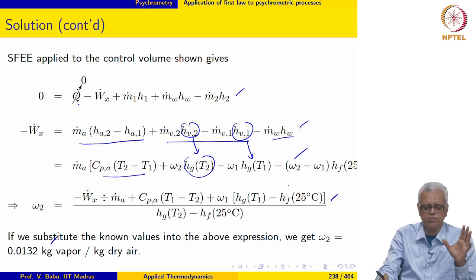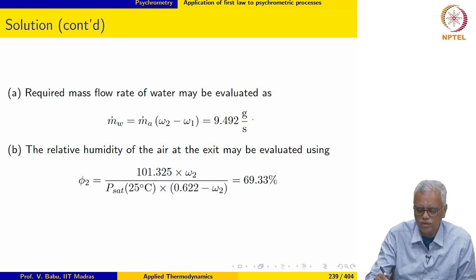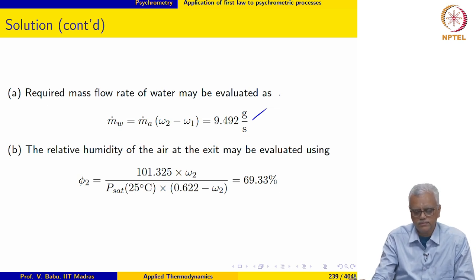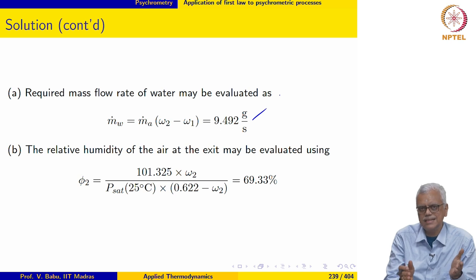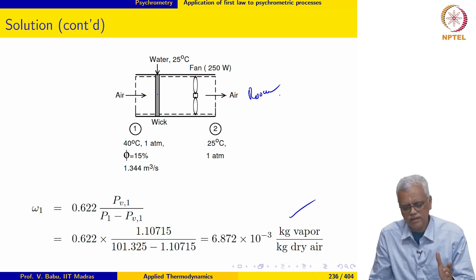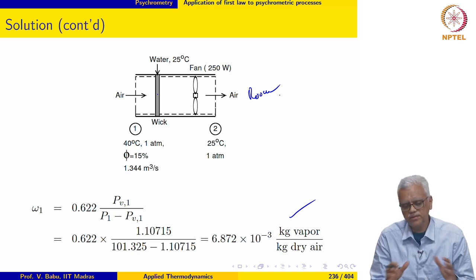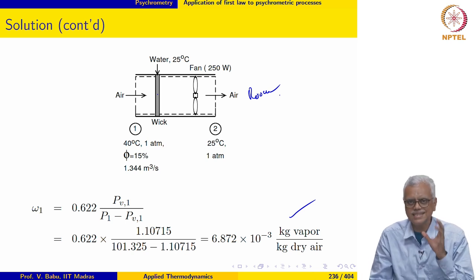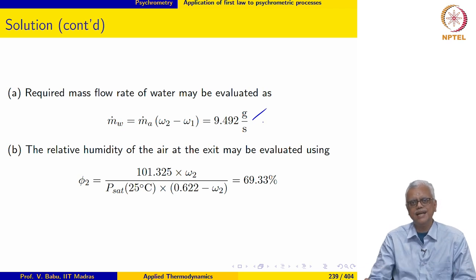The humidity ratio has nearly doubled from 6.8 g/kg at inlet to 13.2 g/kg at exit. The required mass flow rate of water supplied to the wick is 9.492 g/s. This analysis allows us to size the cooler — fan power, air flow rate, and water consumption — while ensuring minimal water usage for best performance. This demonstrates the power of the thermodynamic concepts applied to practical applications.